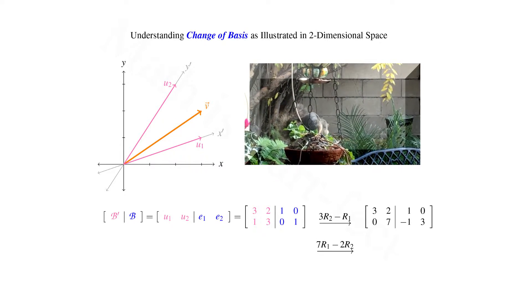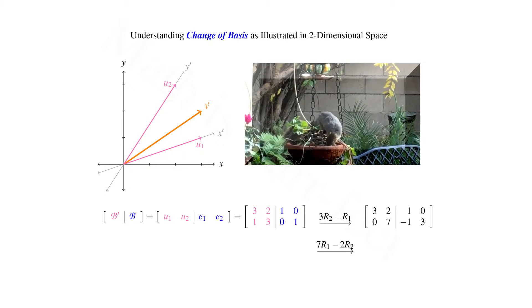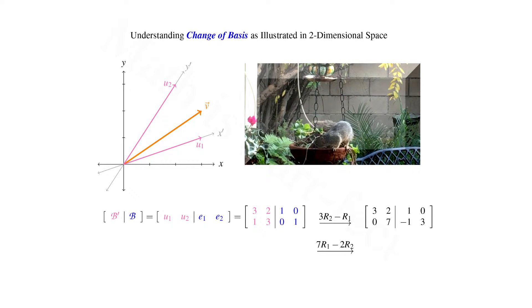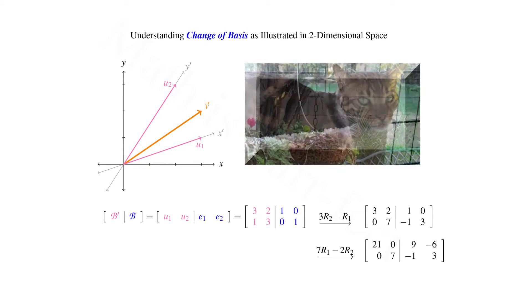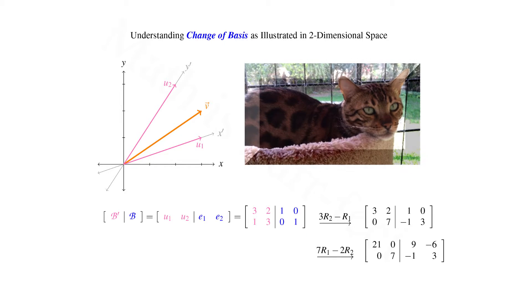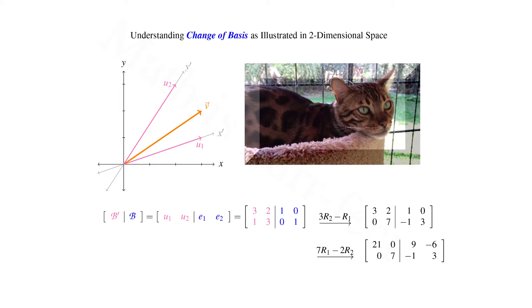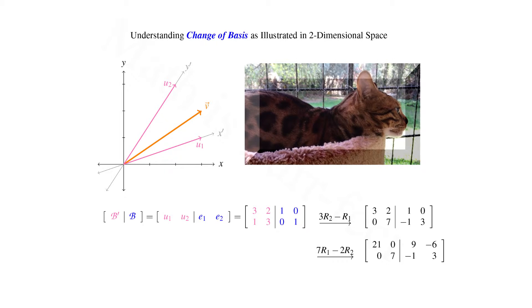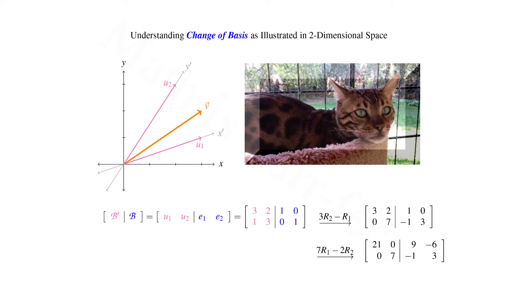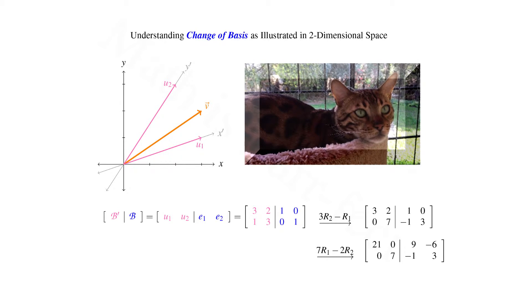We note that in order to zero out the 2 in the top row to the left of the augment, we must first multiply row 1 by 7, then subtract twice row 2 from the corresponding entries. Now row 2 remains the same, that is 0, 7, negative 1, and 3. Row 1 now becomes 7 times 3 minus 2 times 0 equals 21 in the first component. Then 7 times 2 minus 2 times 7 equals 0. And now to the right, we'll have 7 times 1 minus 2 times negative 1, which equals 9. And then 7 times 0 minus 2 times 3 equals negative 6.